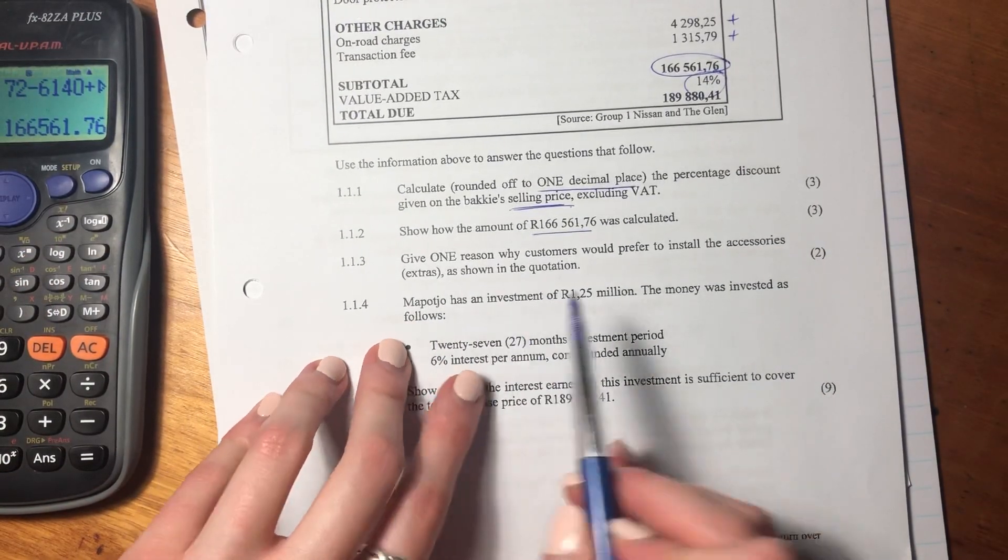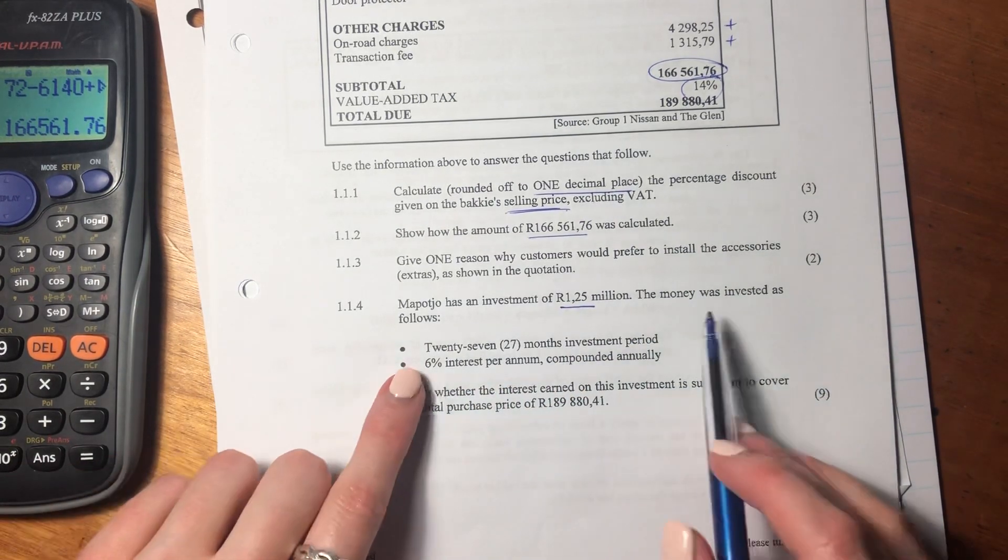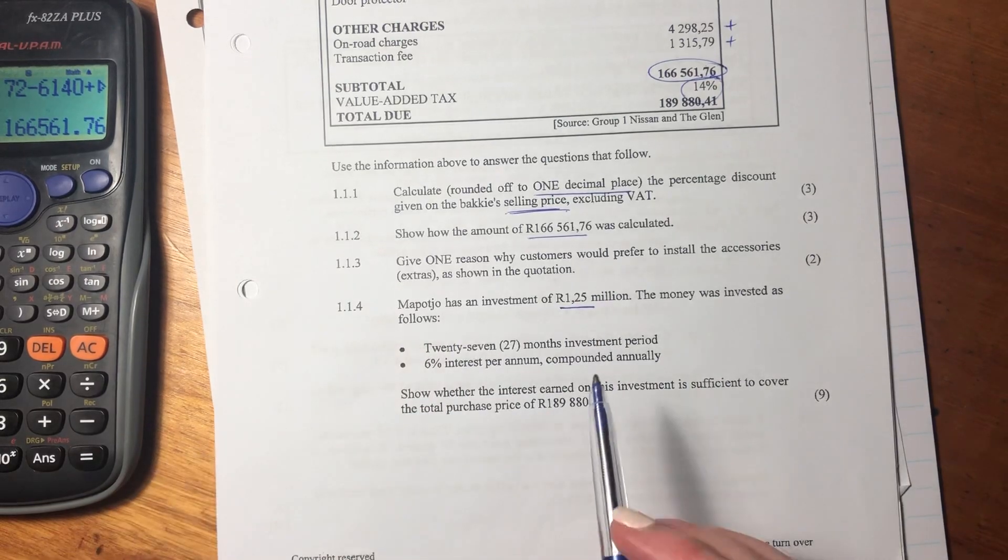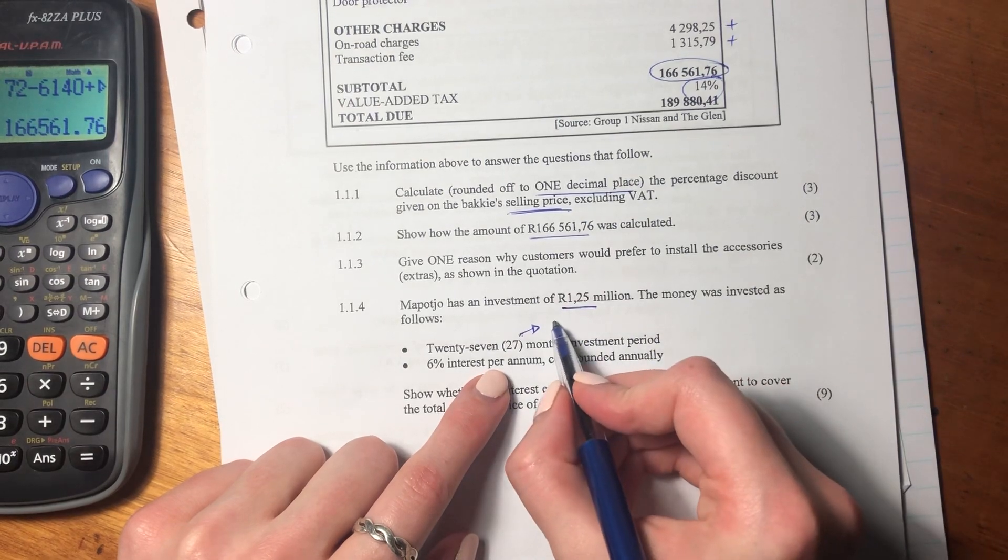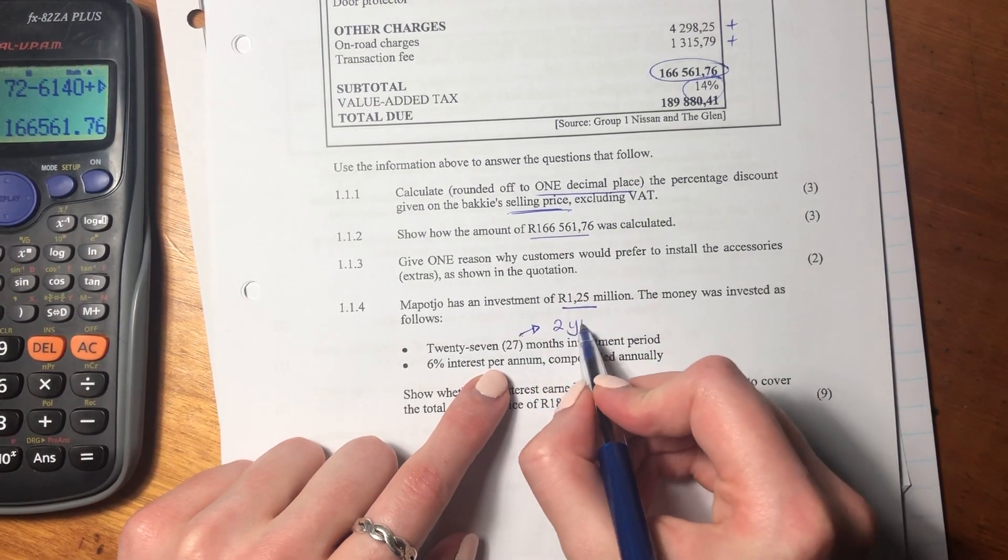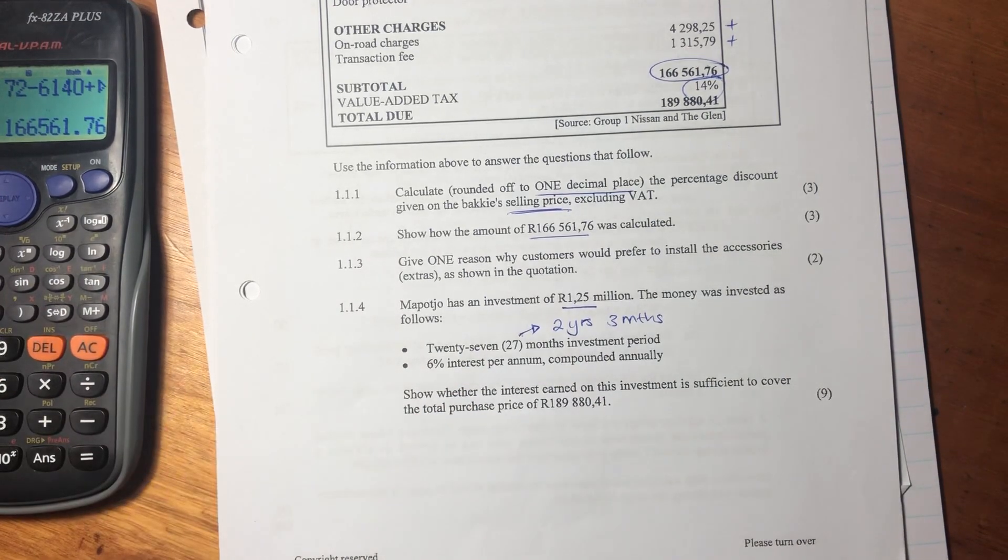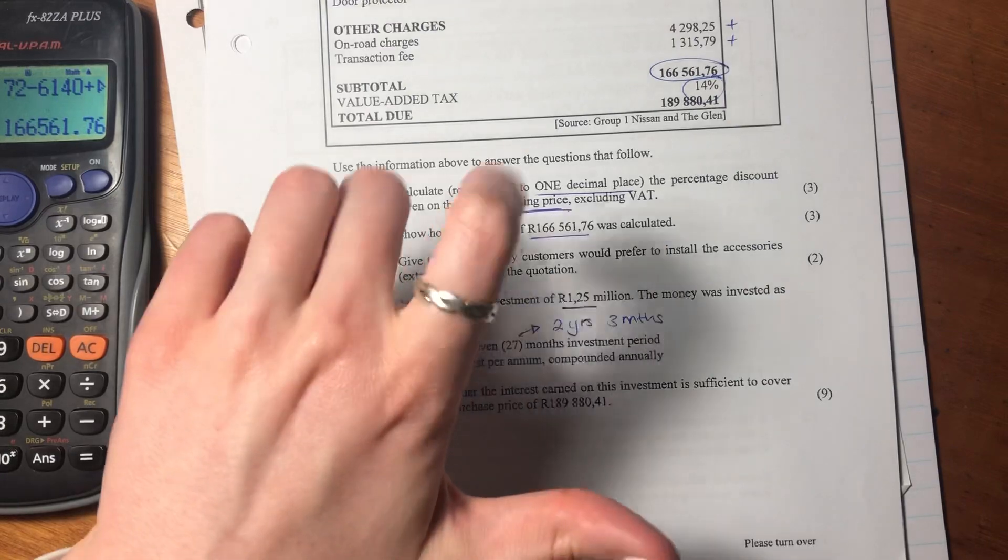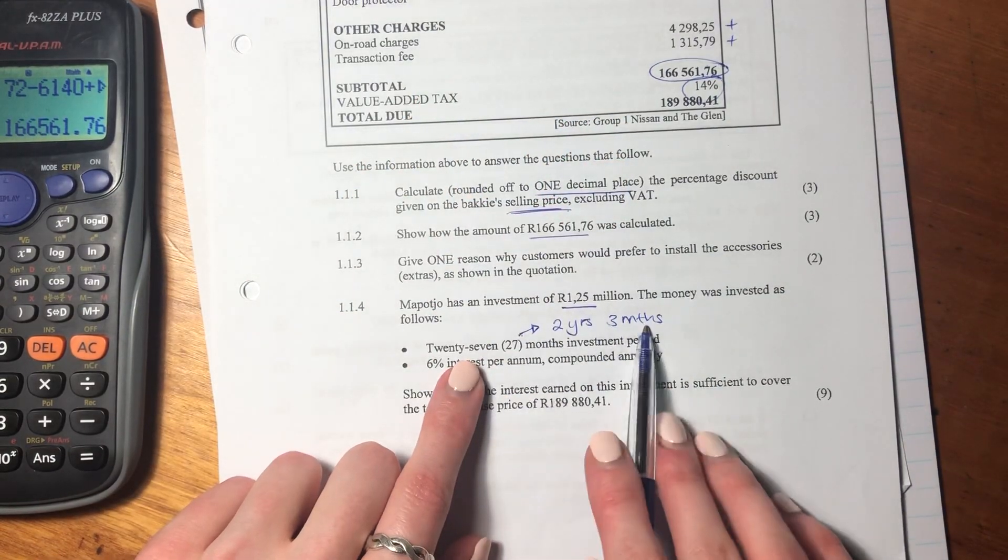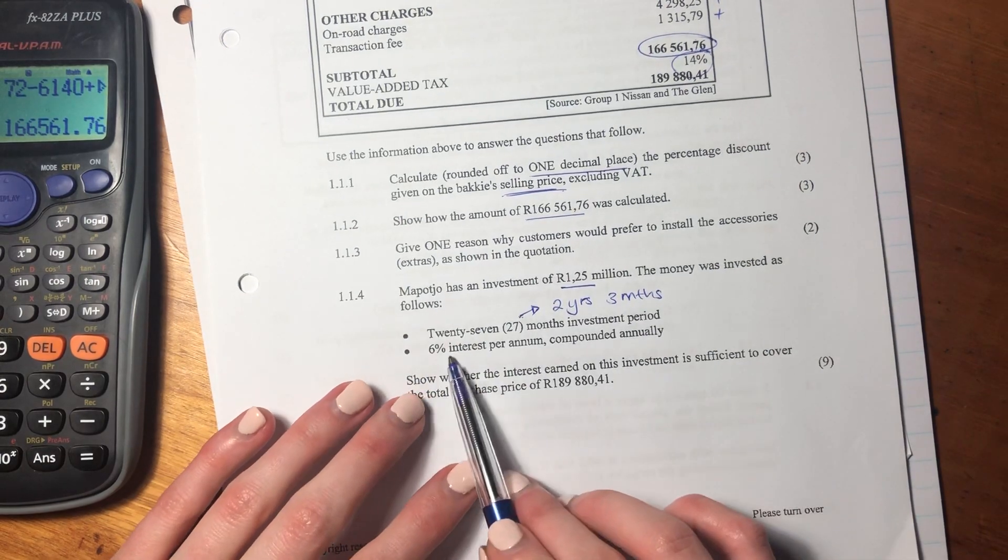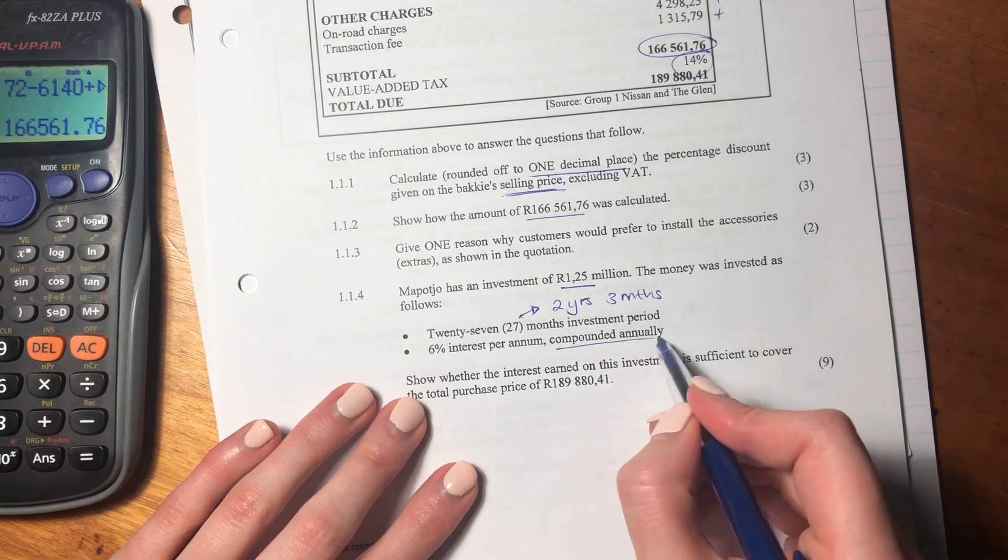So this is, Mapocho has an investment of 1.25 million rand. You're living her best life. The money was invested as follows - 27 months was the investment period. So 27 months is two years and three months. Now you might be saying how on earth do you know that? Well remember there are 12 months in a year, so one year is 12 months, two years is 24 months, and then we have three months left over. So it's two years and three months. Then it says there was a 6% per annum interest rate and was compounded annually.